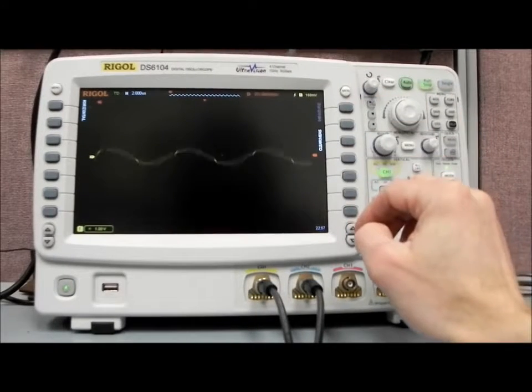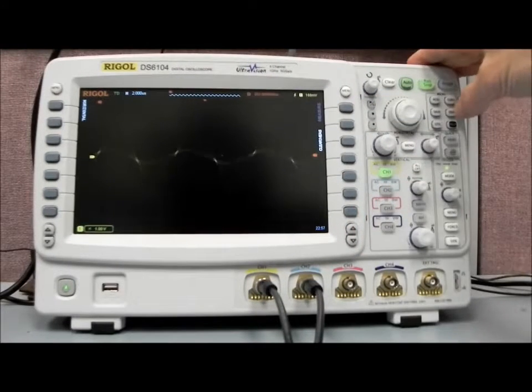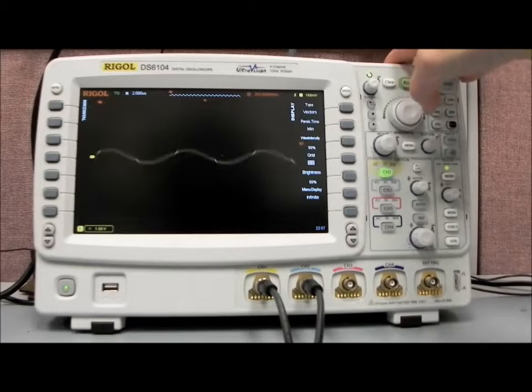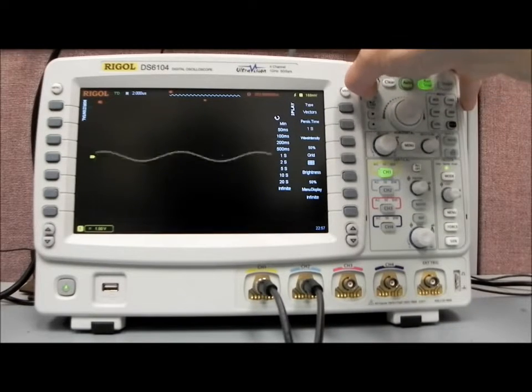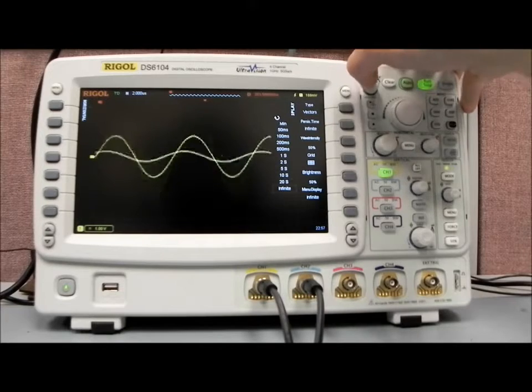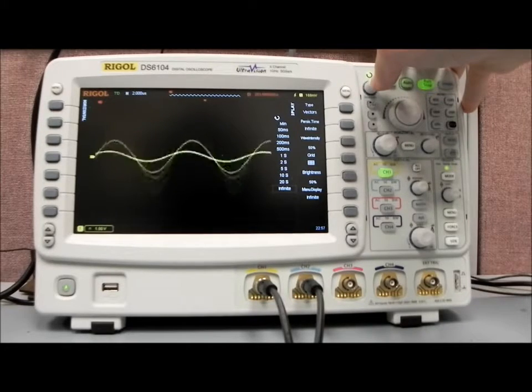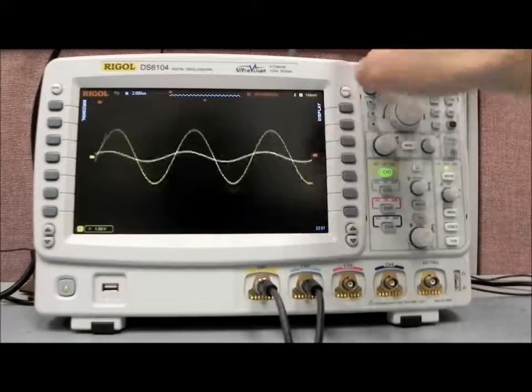And so now you can see that we do have modulation, but it's fairly tough to see what the maximum values are or what type of changes we have going on here. What you can do with the scope is, with the display button, we can turn the minimum persistence. Persistence is just going to change the amount of time that each of the pixels is going to be lit.